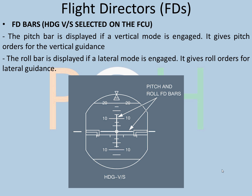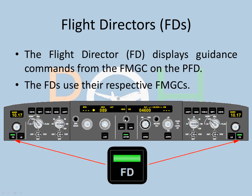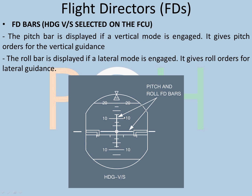There are three topics regarding FDs: FD bars, heading versus track select, and heading/vertical speed selected on the FCU. If heading and vertical speed is selected via the toggle switch on the FCU, there is a pitch bar and a roll bar. The pitch bar displays vertical mode and gives pitch orders; the roll bar gives lateral mode and roll orders. If you have a roll order to turn right, the roll bar moves right; the pitch bar moves up or down for climb or descent. The idea is to keep the cross centered in the yellow box.